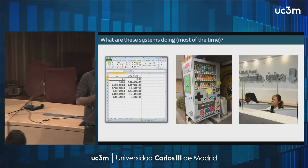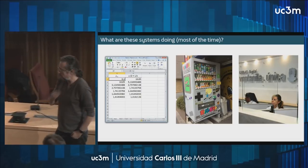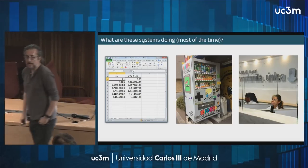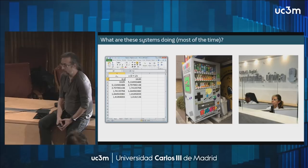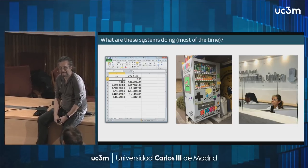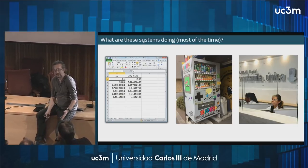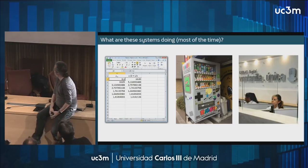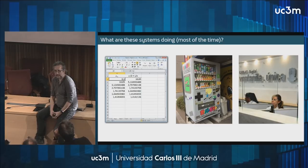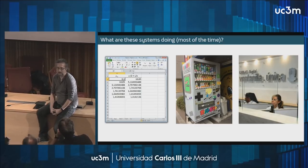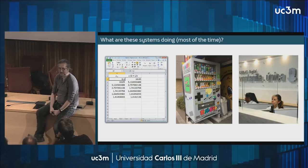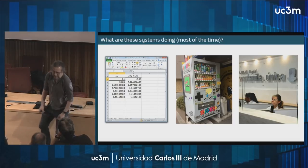These are pictures of three different systems. The first one is a regular spreadsheet application. The second one is a Japanese vending machine — in Japan you can basically buy anything from a vending machine. And the third picture is a civil servant sitting behind a desk. What are these systems doing most of the time? They do nothing. Especially the civil servant.